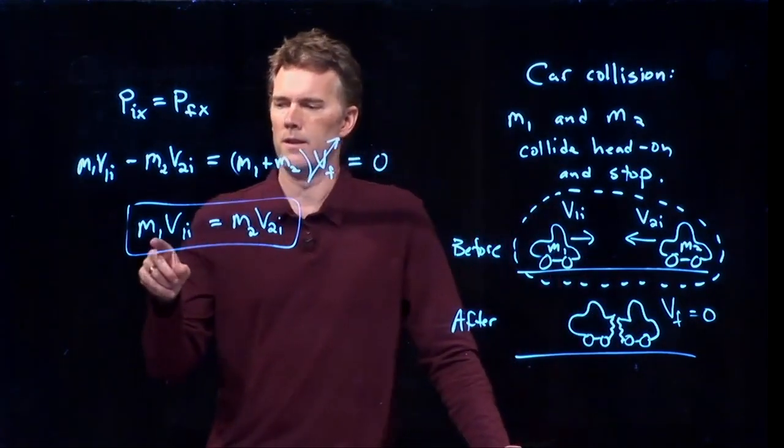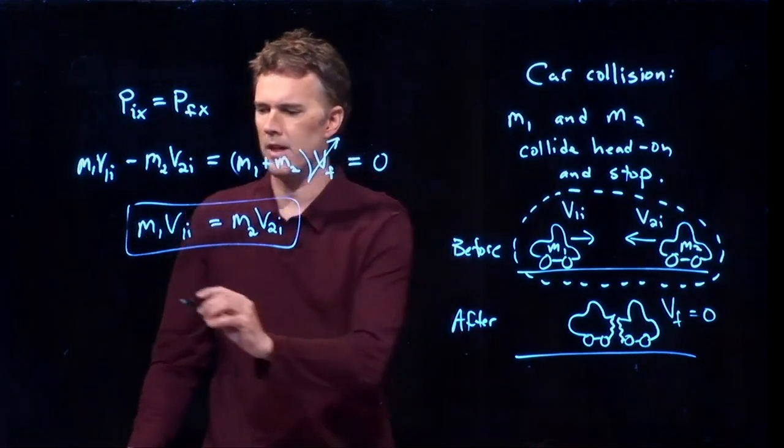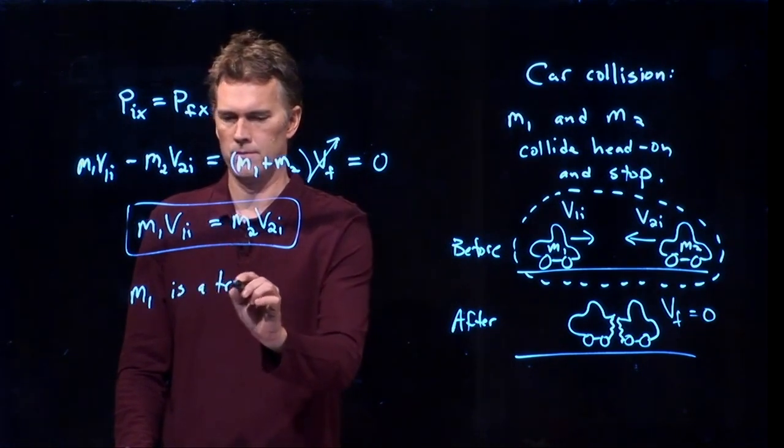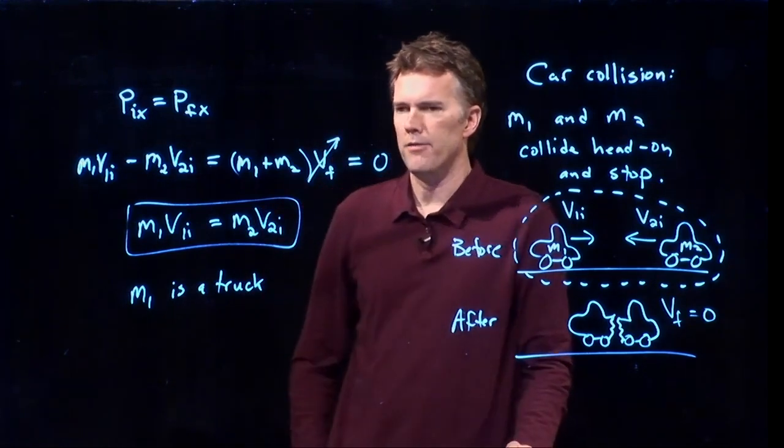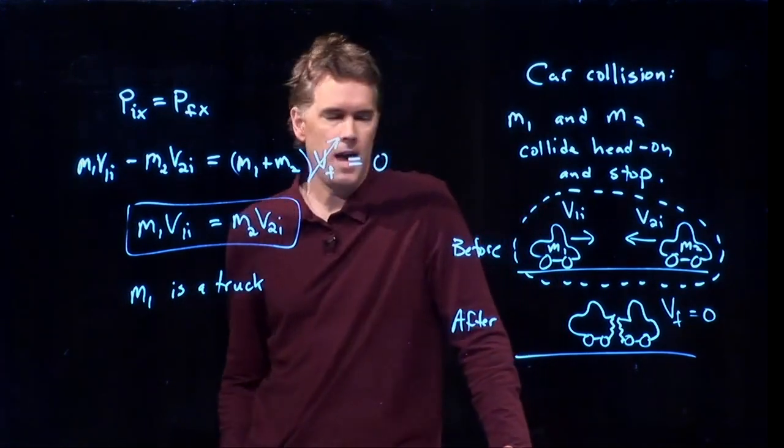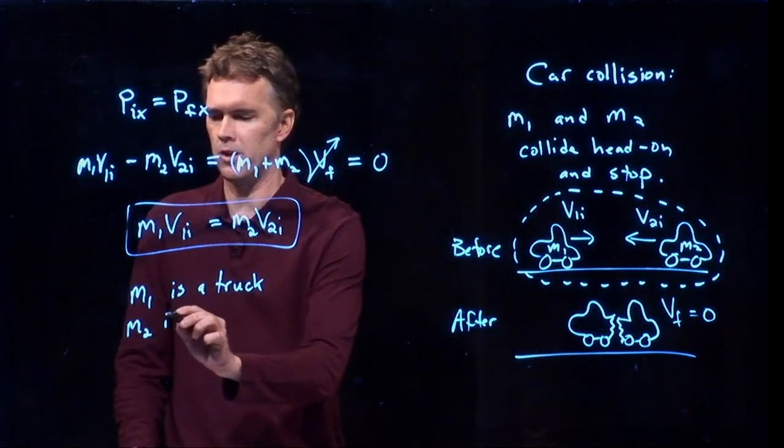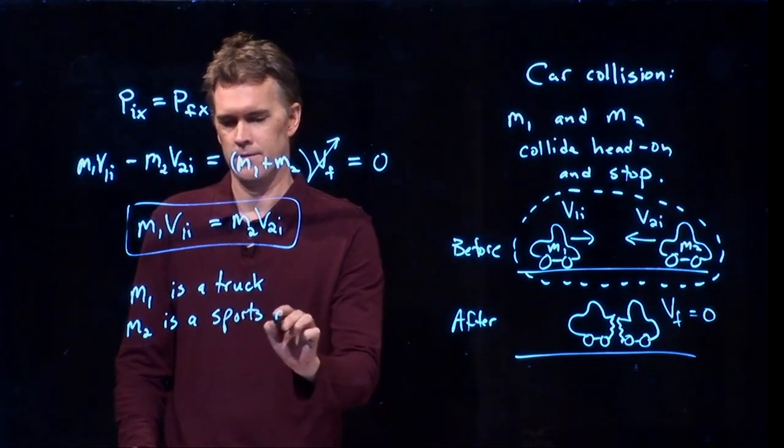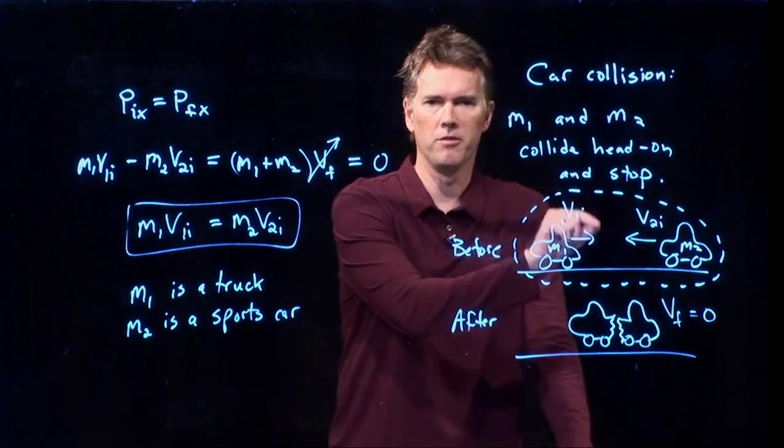But let's say that m1 is very big. Let's say that m1 is a truck. If m1 is a truck and the whole thing is going to come to a stop and m2 is a small sports car, which one of these has to be moving faster?